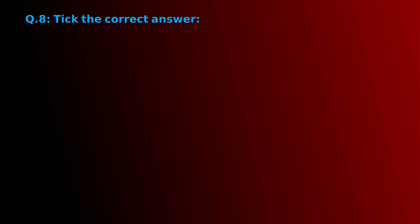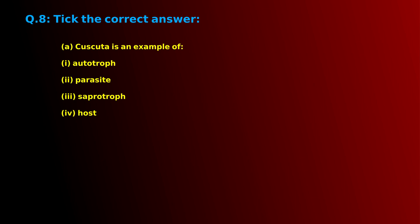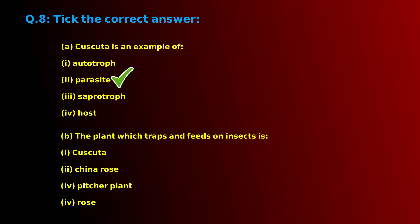Question 8 — Choose the correct answer. Cuscuta is an example of: autotrophs, parasites, saprotrophs, or moss — the answer is parasite. The plant which traps and feeds on insects is: Cuscuta, china rose, pitcher plant, or rose — the answer is pitcher plant.